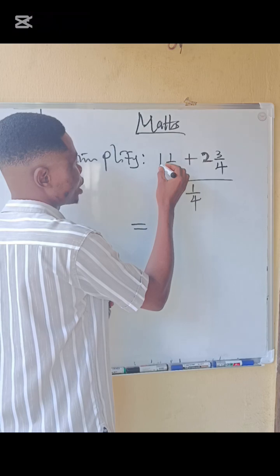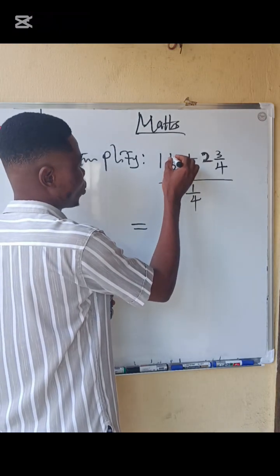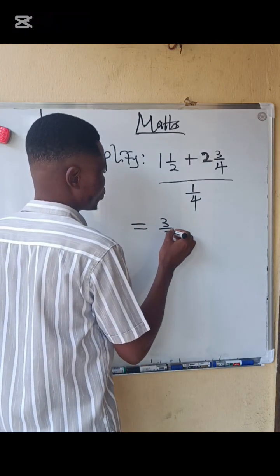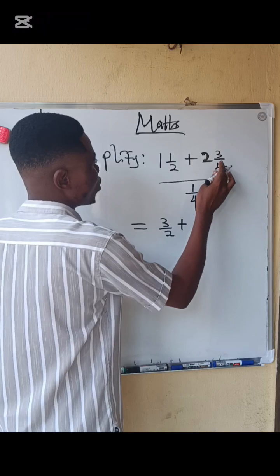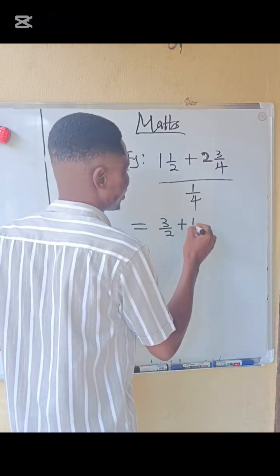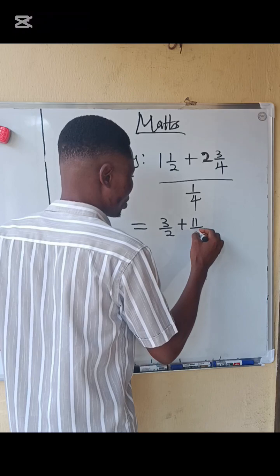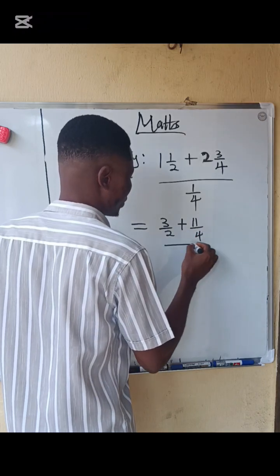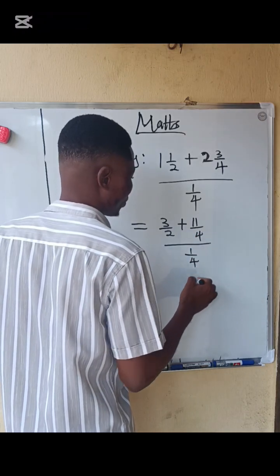For this one now, 2 times 1, that is 2 plus 1, that is 3 over 2, plus 4 times 2, that is 8, 8 plus 3, that is 11 over 4, divided by 1 over 4. Next.